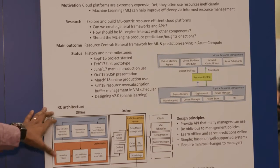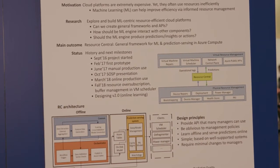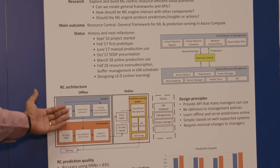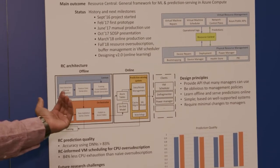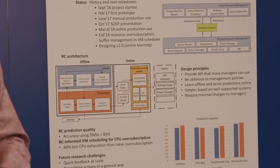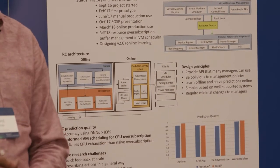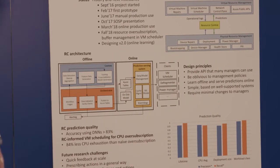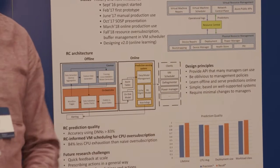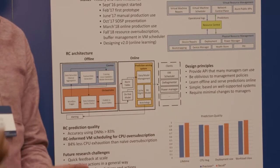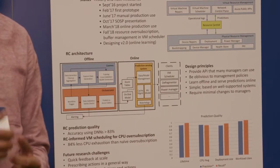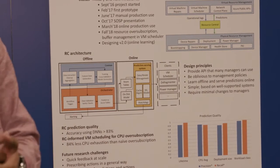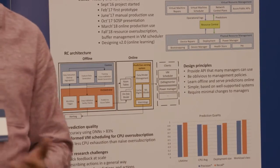Here we can see the architecture of Resource Central. There are two main parts of it. There is offline processing where you collect telemetry and create machine learning generated models, and there is an online serving platform which allows the resource managers to make queries to Resource Central and serve predictions.